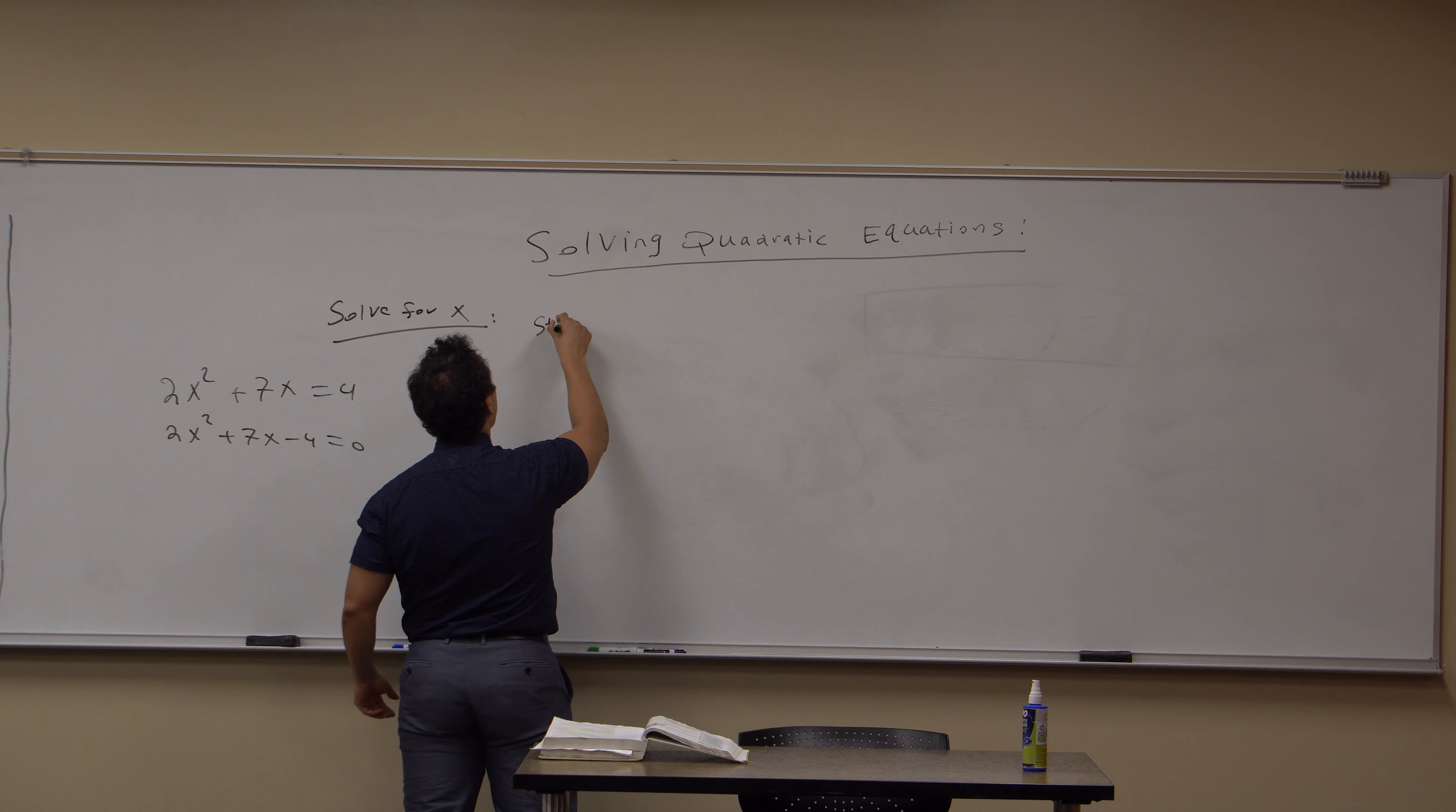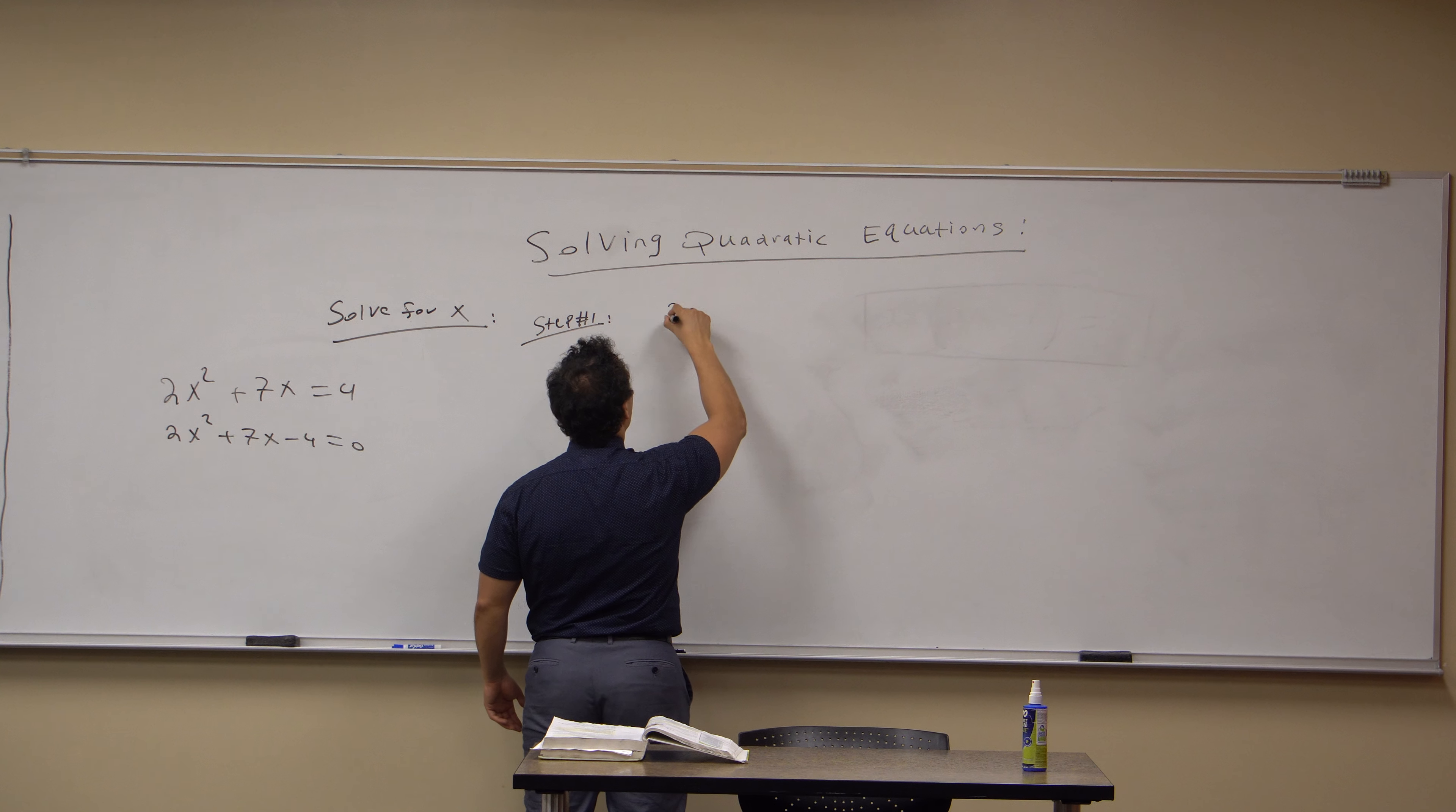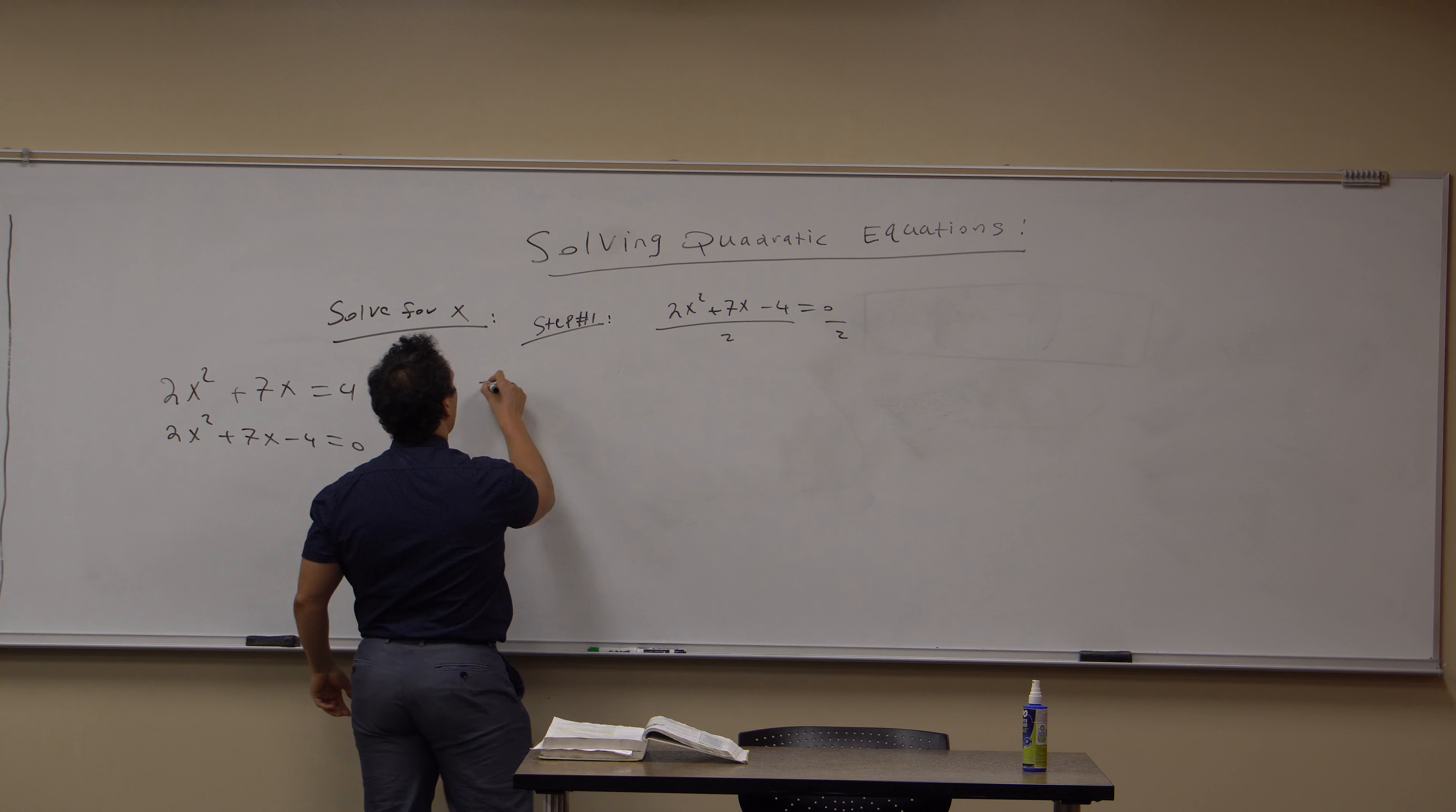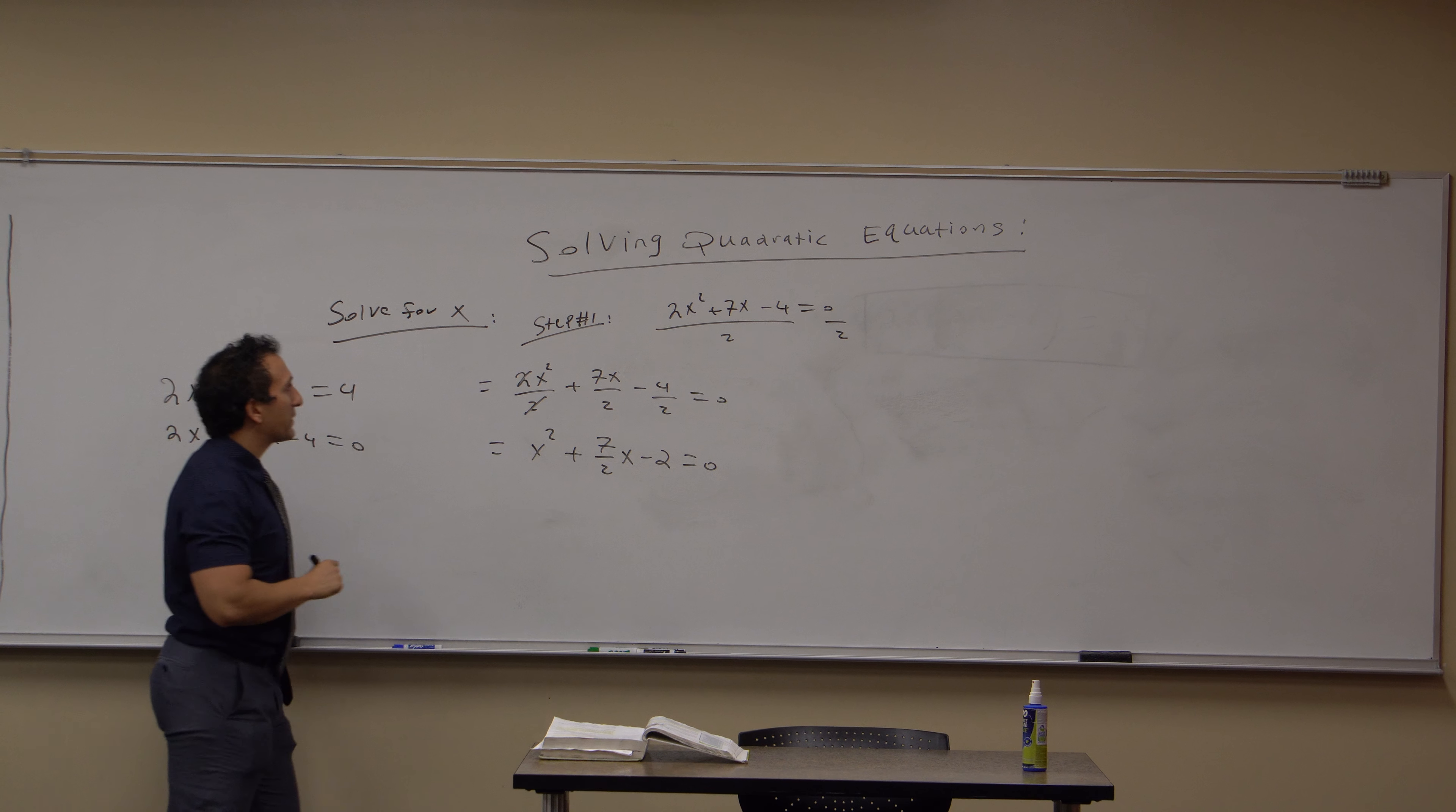However, step 1, you have to make sure that the coefficient in front of the quadratic term is 1. Step 1, we have to divide both sides by 2. 2x² + 7x - 4 = 0. I have to divide this side by 2 and this side by 2 so that I can get rid of that 2 coefficient right there. Because when I distribute the 2 to each term, I get 2x²/2 + 7x/2 - 4/2 = 0. These 2's cancel here. So I have x² + 7/2x - 2 = 0. That was step 1.